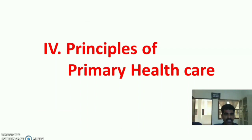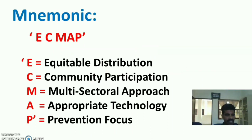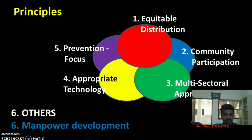The next session is principles of primary health care. The mnemonic for principles of primary health care is ECMAP. E stands for Equitable distribution, C stands for Community participation, M stands for Multi-sectoral approach, A stands for Appropriate technology, and P stands for Prevention focus. Most books describe these five main principles.